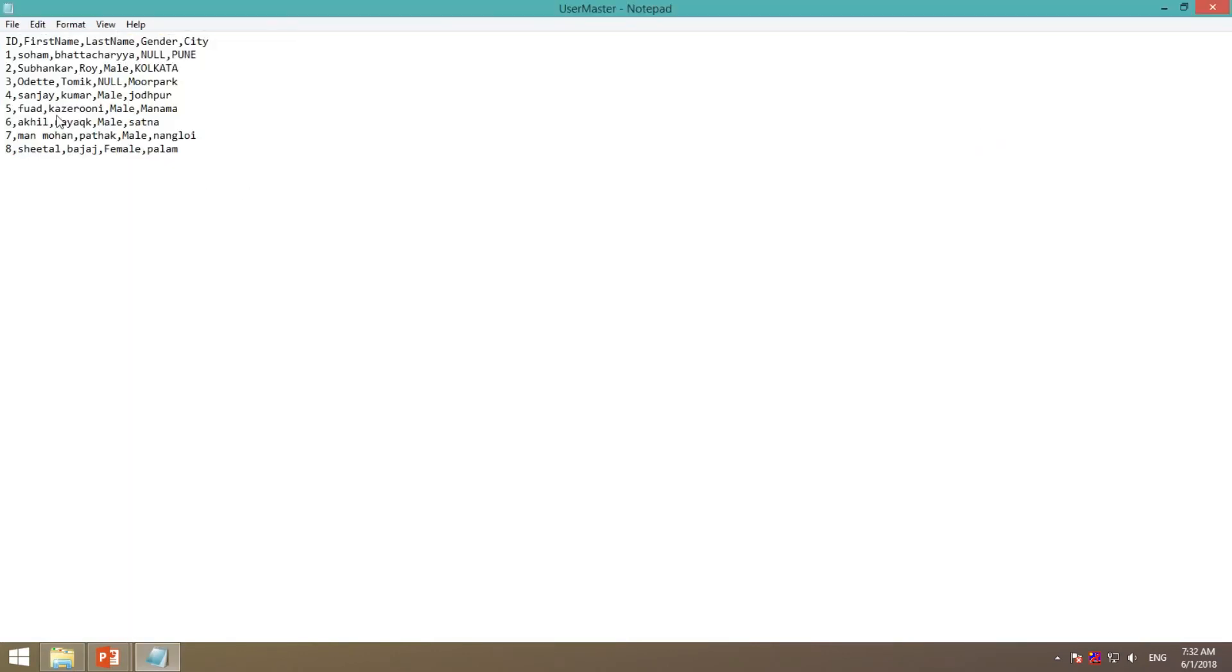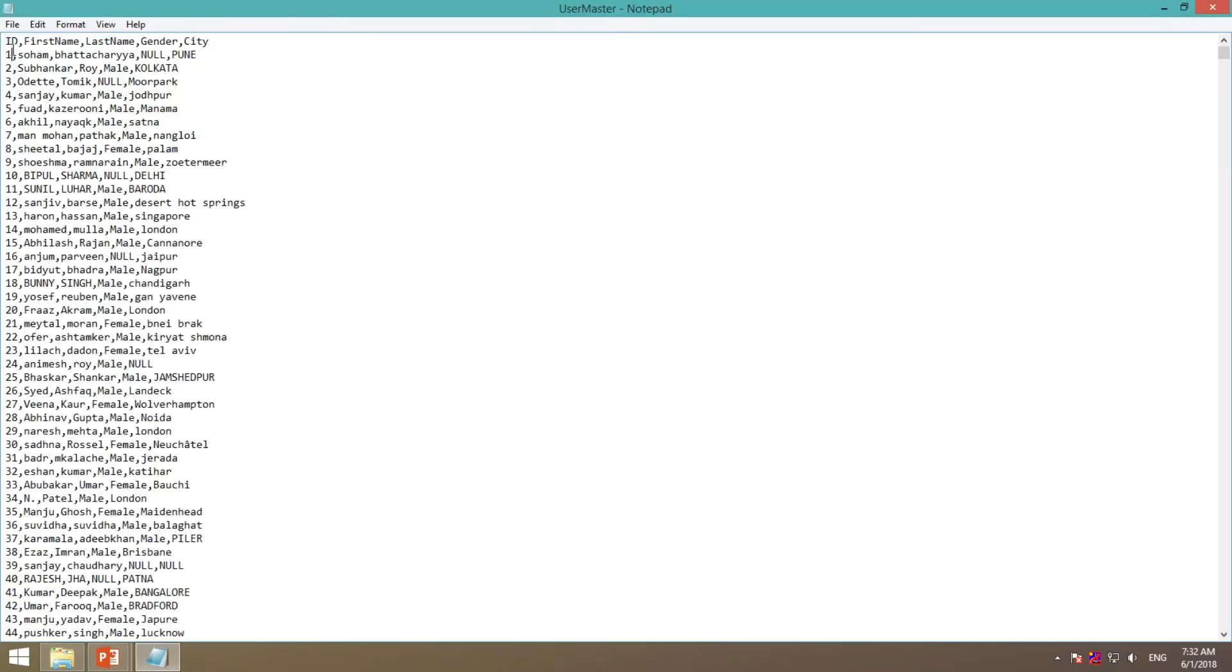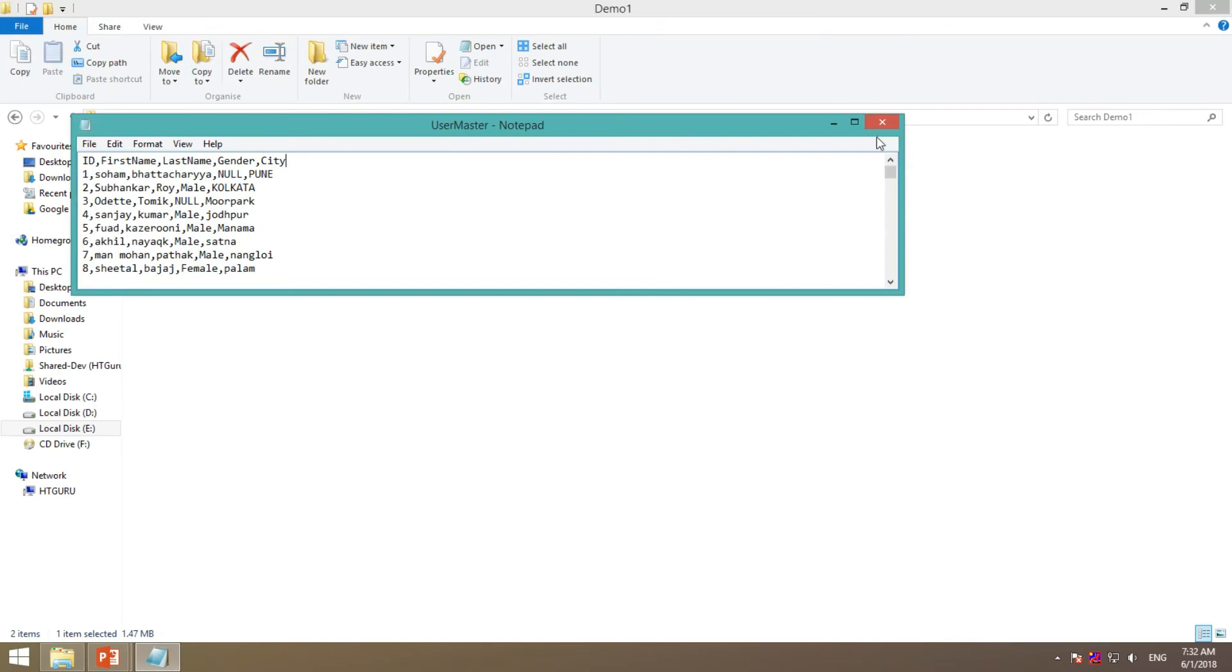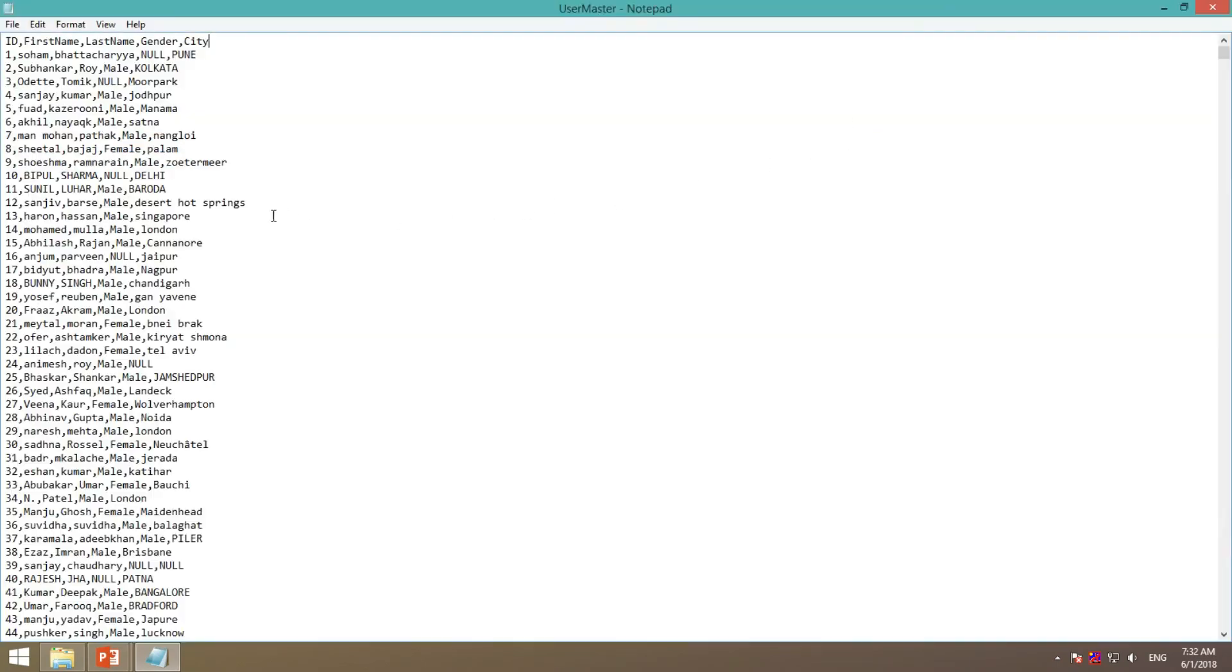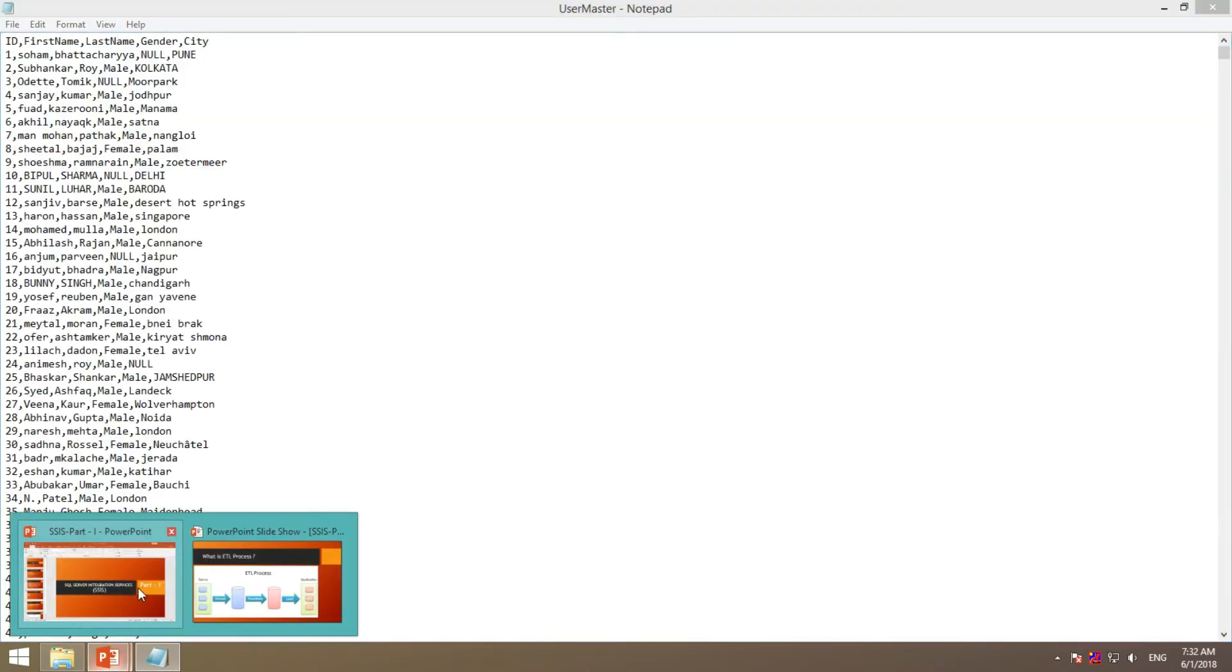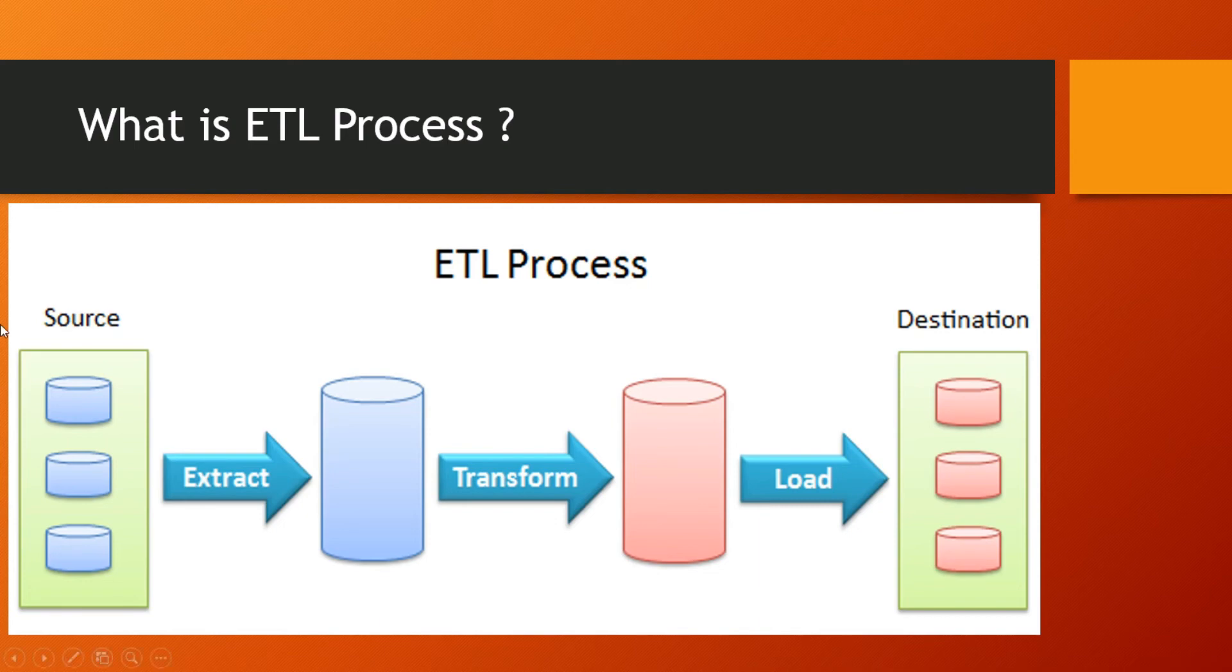Suppose this is our source file. This source file contains ID, first name, last name, gender, and city. So let's check that SSIS first extracts this source file, and suppose our requirement is to insert this source file into SQL database or warehouse.